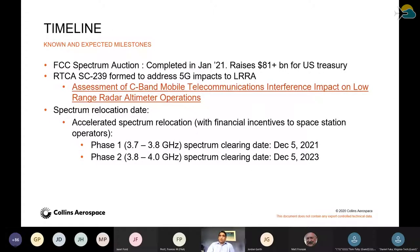Although the spectrum has been auctioned, from a rollout perspective there's a phase one and phase two. In phase one, they're looking to start utilizing the lower 100 MHz — the 3.7 to 3.8 band — starting around the second or third week of December 2021. Phase two will utilize the rest from 3.8 to 3.98, with a 20 MHz guard band at the top end. They'll be using the entire 3.7 to 3.98 by the time December 2023 kicks in.